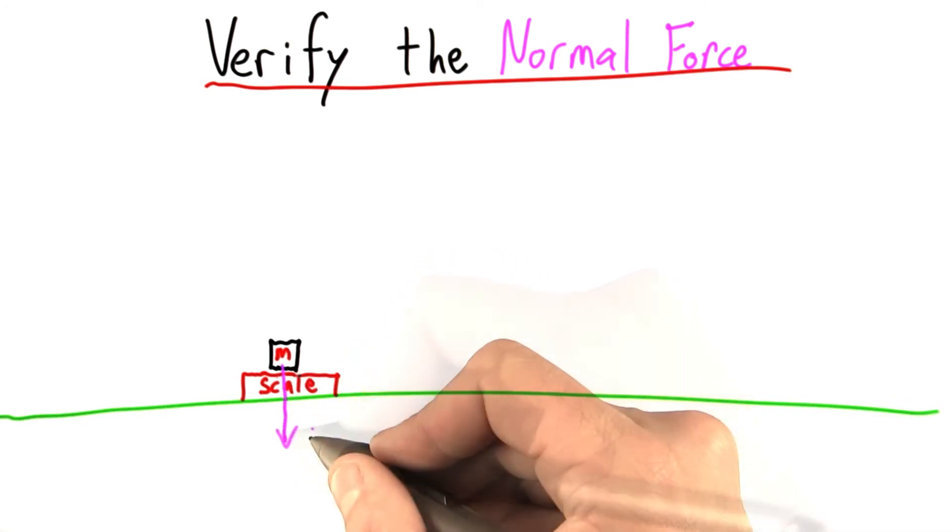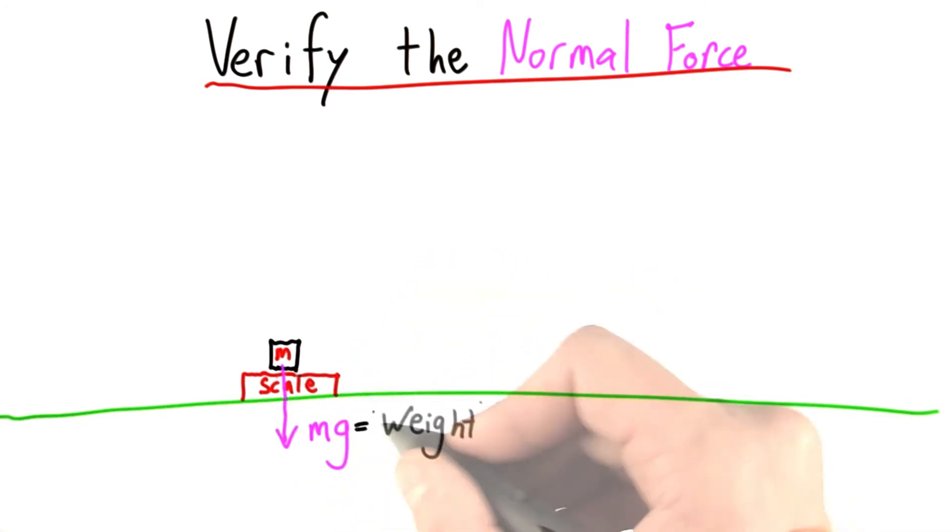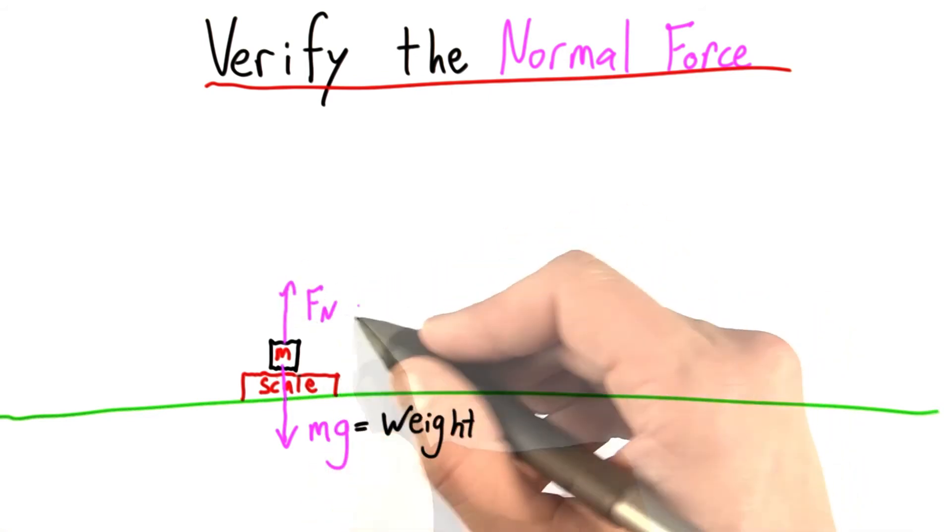We know that gravity is pulling you downwards with a strength mg. That mg, by the way, is what we colloquially call your weight. The scale, of course, is pushing up with a normal force.